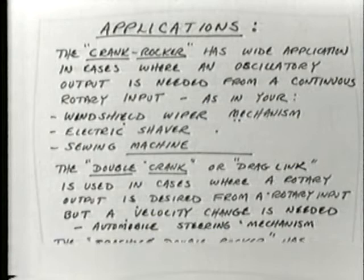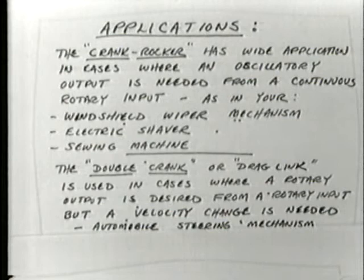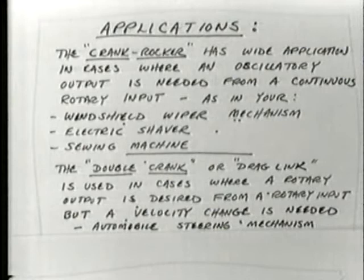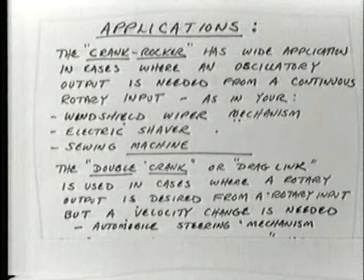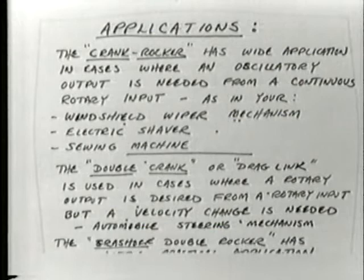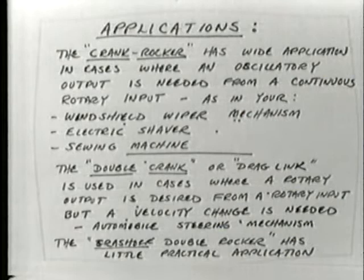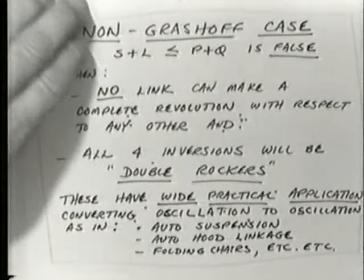A double crank or drag link is used when you want a full-revolution output from a full-revolution input, but wish to change the output velocity relative to the input. Motors tend to run at constant speed, but you may want variable output speed — the drag link enables that conversion. Automobile steering mechanisms use drag links. The Grashoff double rocker has little practical application because the link making a full revolution is the coupler, not attached to ground, making it very difficult to connect a motor to it.